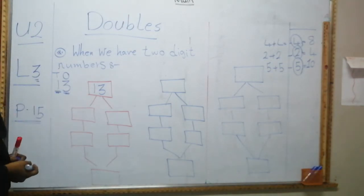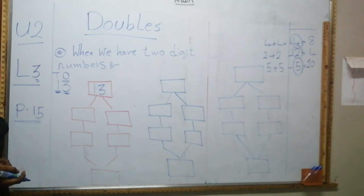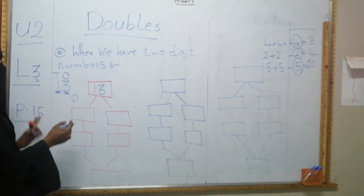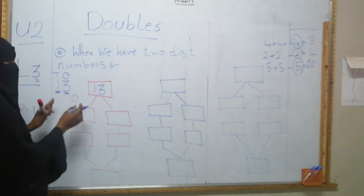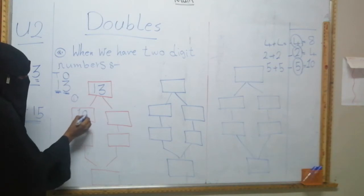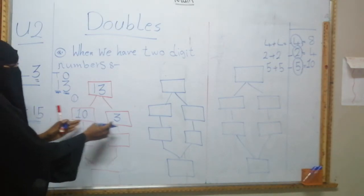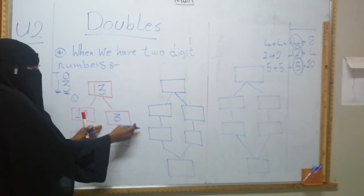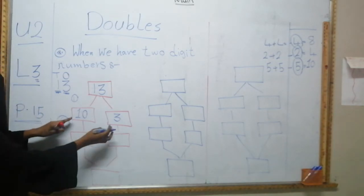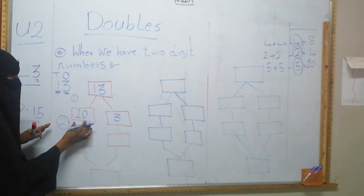I would like to double thirteen. What should I do? There are steps I should follow to get the doubles. Step one: you have the tens and the ones. Let's split the tens and the ones. Here we have ten, and here we have three. I put the tens here and the ones here.